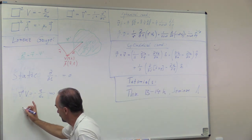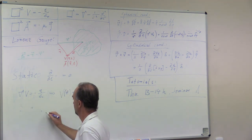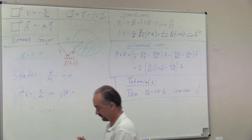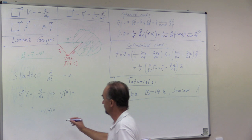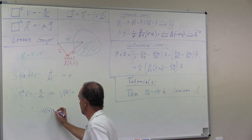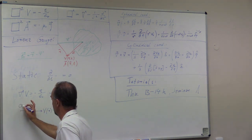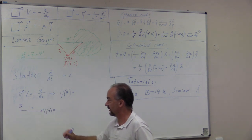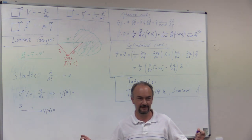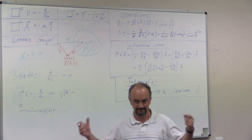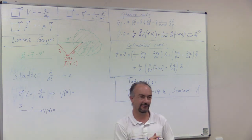The potential at this point R can be calculated — we had this on the board last week — as the electrostatic potential for a static charge distribution. If you just have a single charge Q at some distance R, what is the potential V of R at distance R away from a point charge Q?